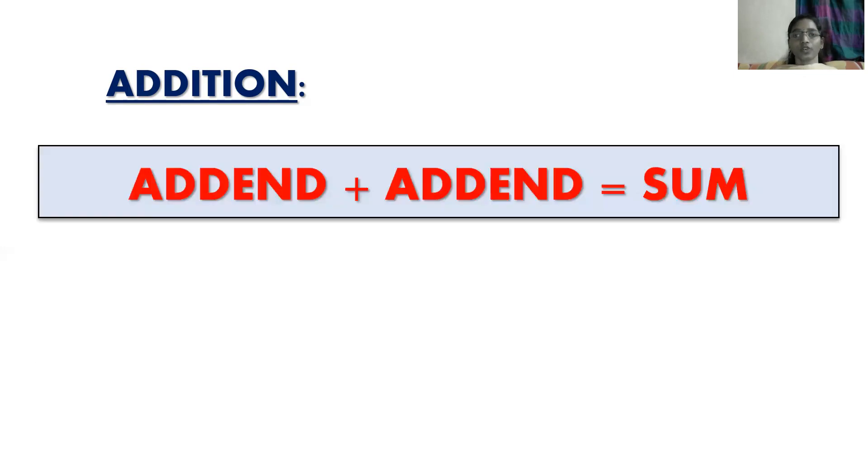How do we add the given large numbers? We use two terms. Term 1 is addend and term 2 is sum. In addition, the first large number to be added is called the addend, as well as the second large number is also called the addend, and the answer we obtain for addition is called the sum. So addend plus addend gives you sum.